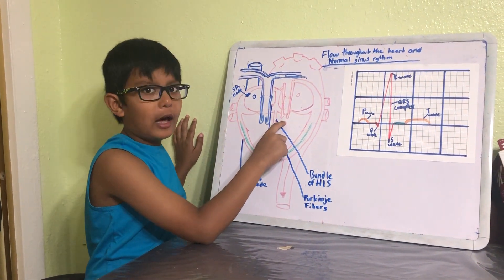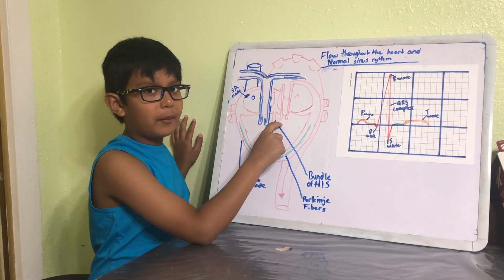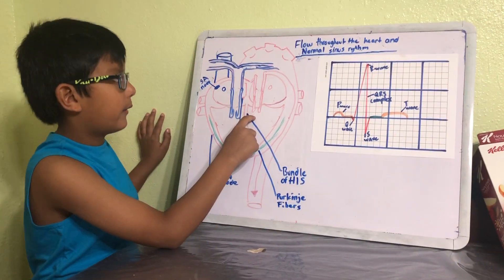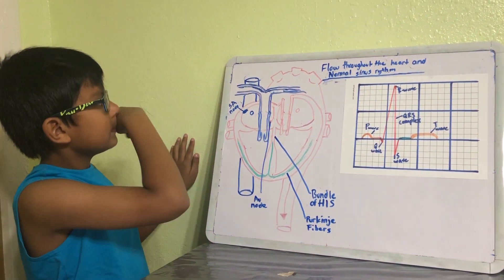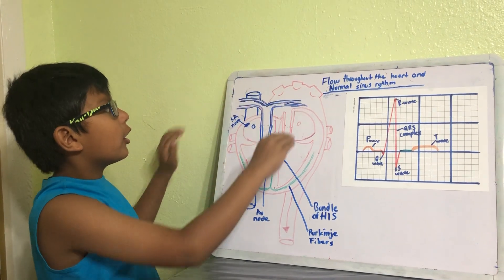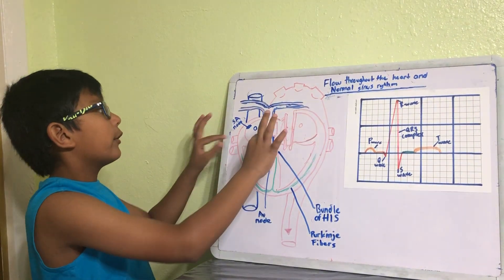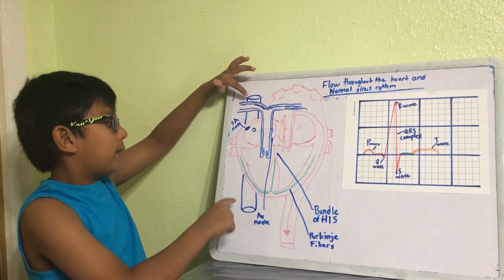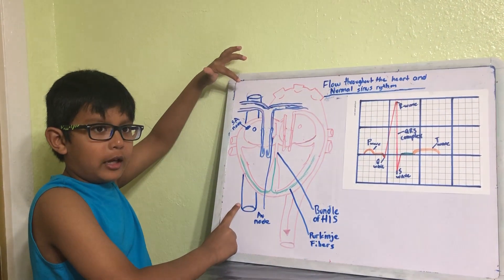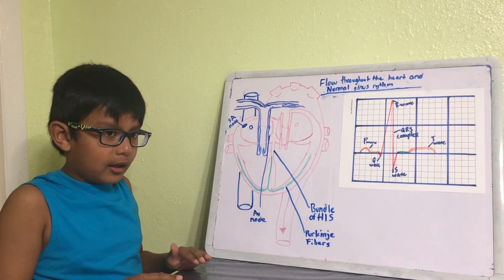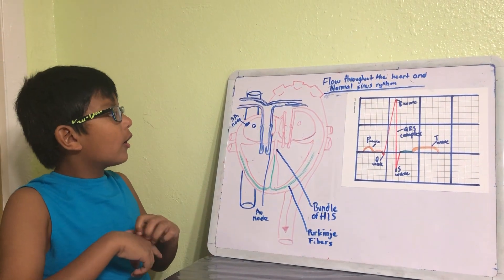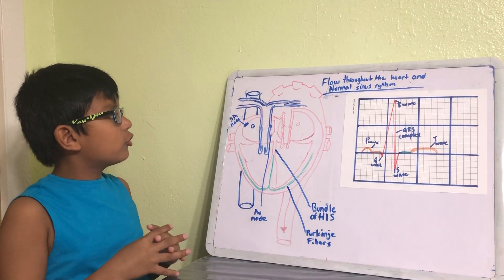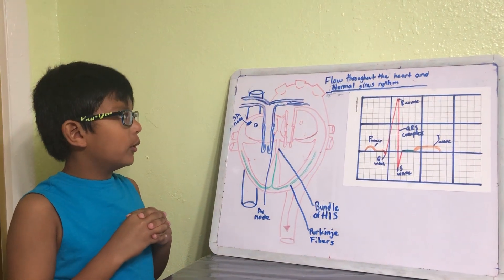Then this is the pulmonic valve, also known as the right semilunar valve, and here we have the aortic valve or the left semilunar valve. These are the pulmonary arteries and the pulmonary veins, and that's the aorta. This is the superior vena cava and that's the inferior vena cava.